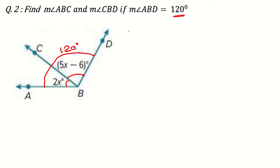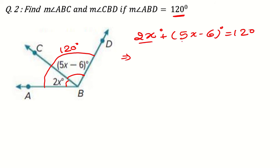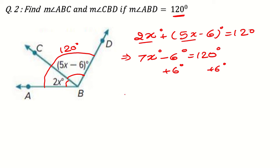We can make a simple equation: 2x plus 5x minus 6 degrees is equal to 120. Simplify: 2x plus 5x is 7x, so 7x minus 6 equals 120. Add 6 to both sides, giving 7x equals 126. Divide both sides by 7, so x equals 18.